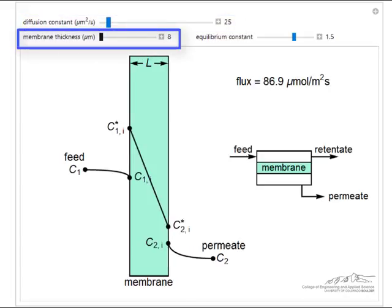If we decrease the membrane thickness, then the flux increases, we don't change those concentrations.